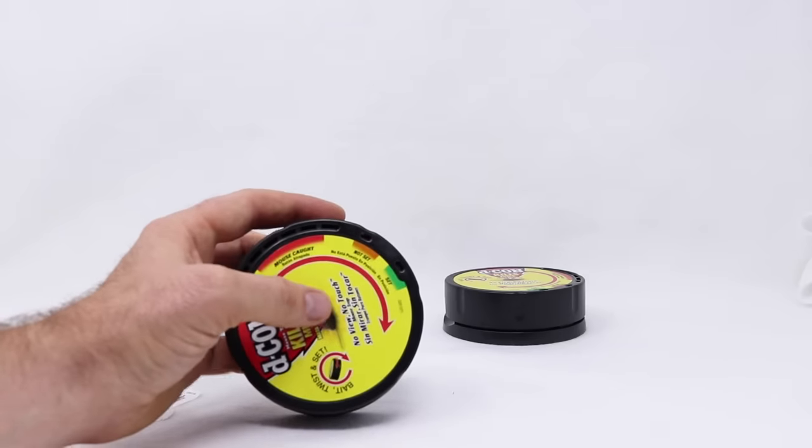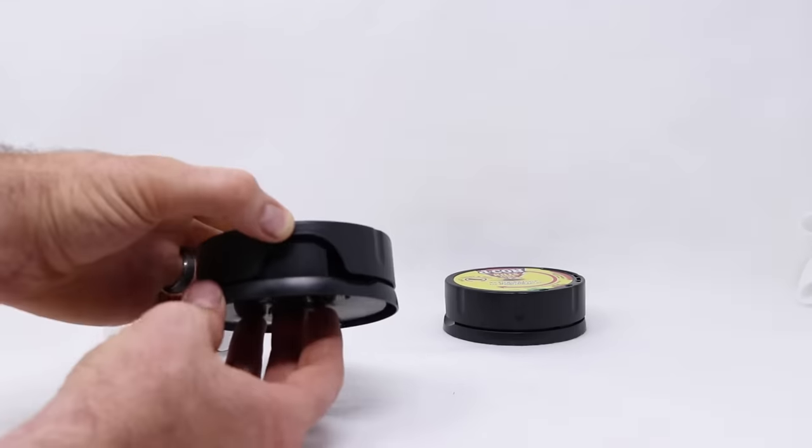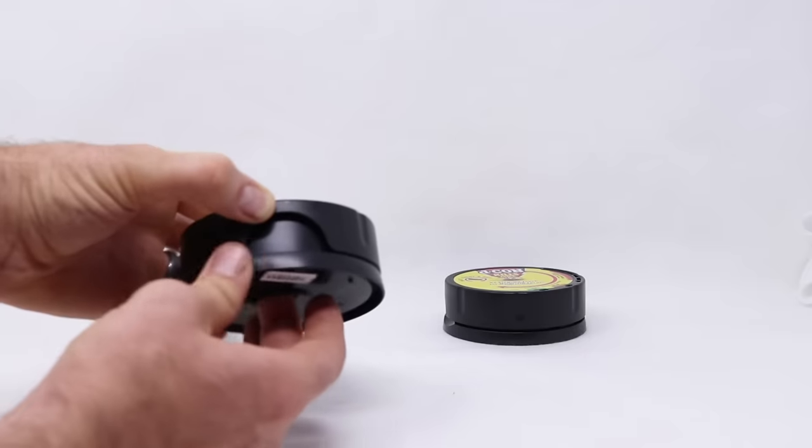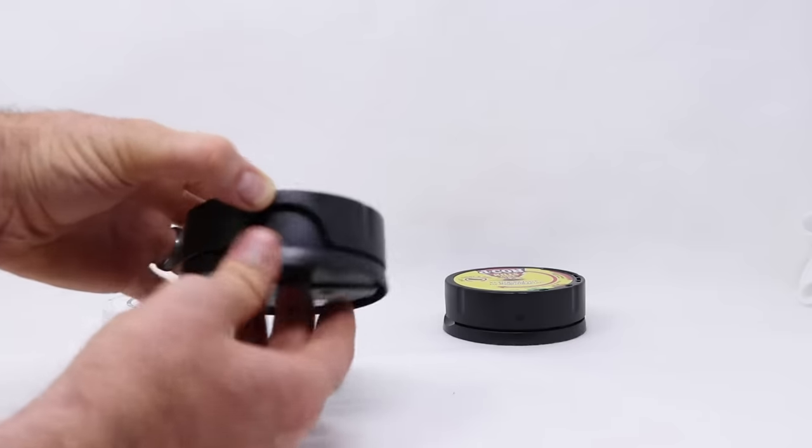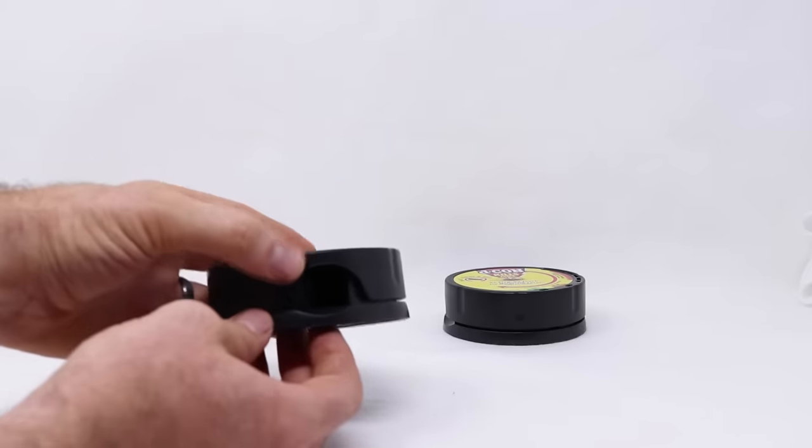There's a red arrow going this way so you have to twist it to set it. You spin it around and you can feel the spring tightening, almost like winding a clock. There's a red mechanism there. Now it's locked into place.